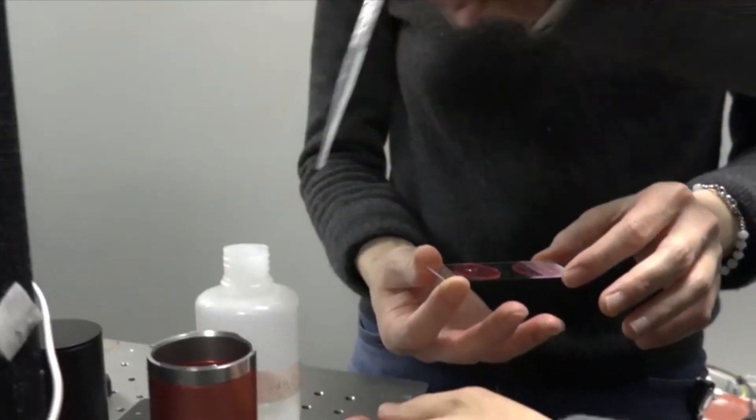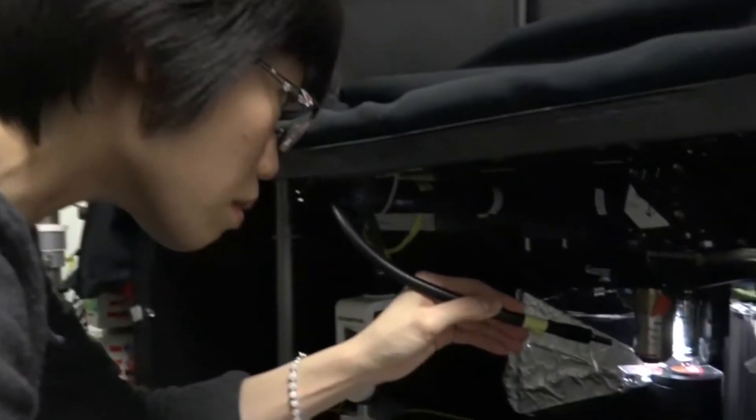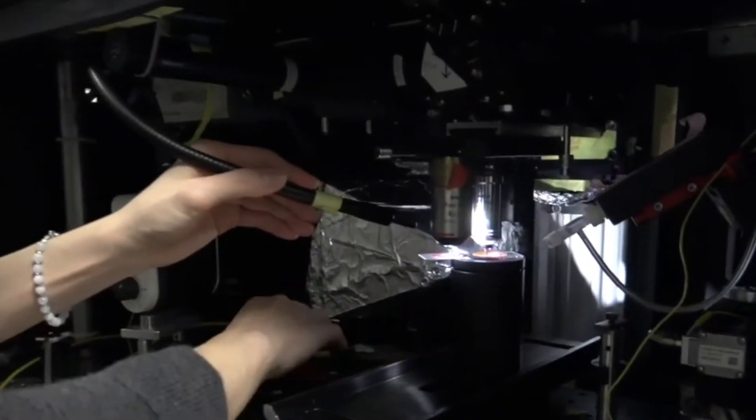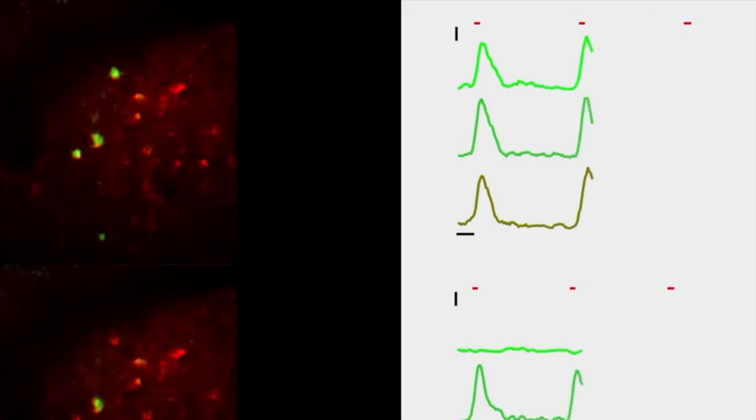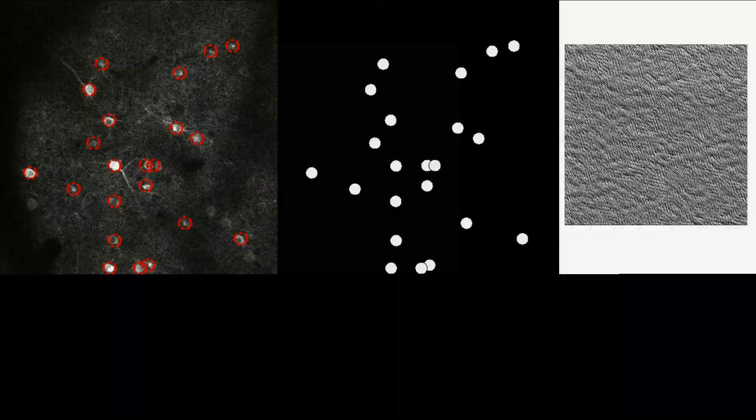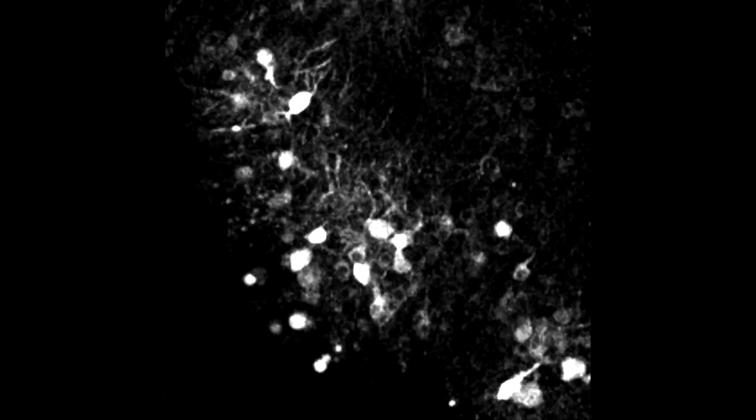Using genetically encoded calcium indicators, we can also observe neuronal activity, evoked in this instance in the visual cortex in response to specific visual stimuli. Two-photon photoactivation of neurons with a precise spatiotemporal pattern and simultaneous monitoring of neuronal activity is an approach known as circuit optogenetics.